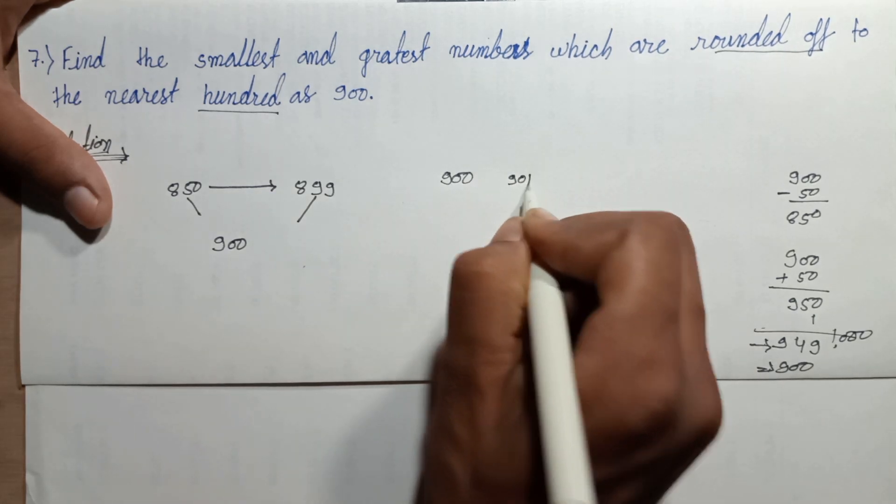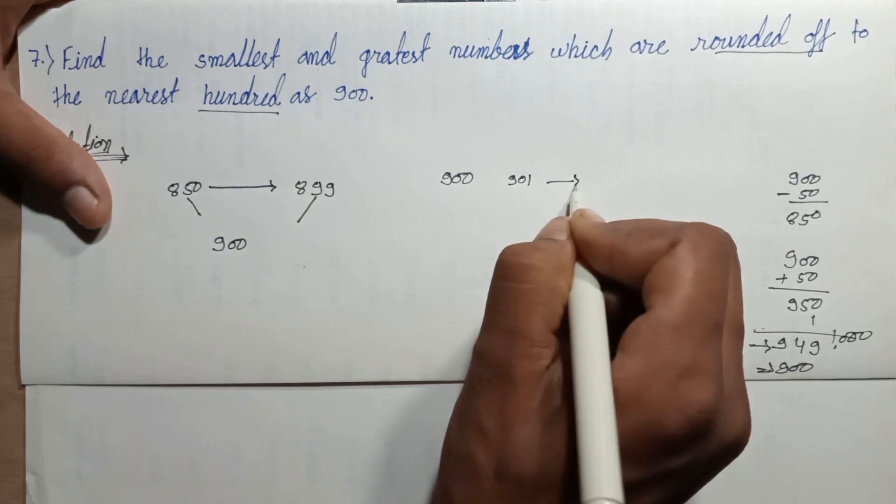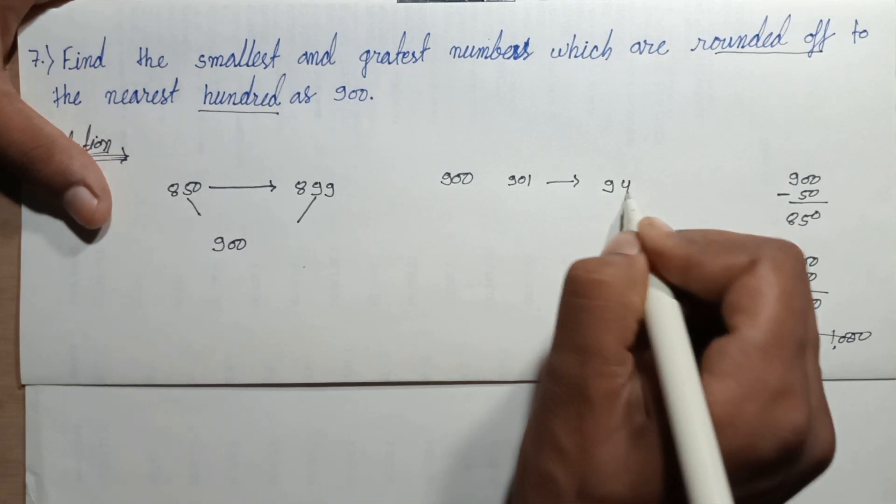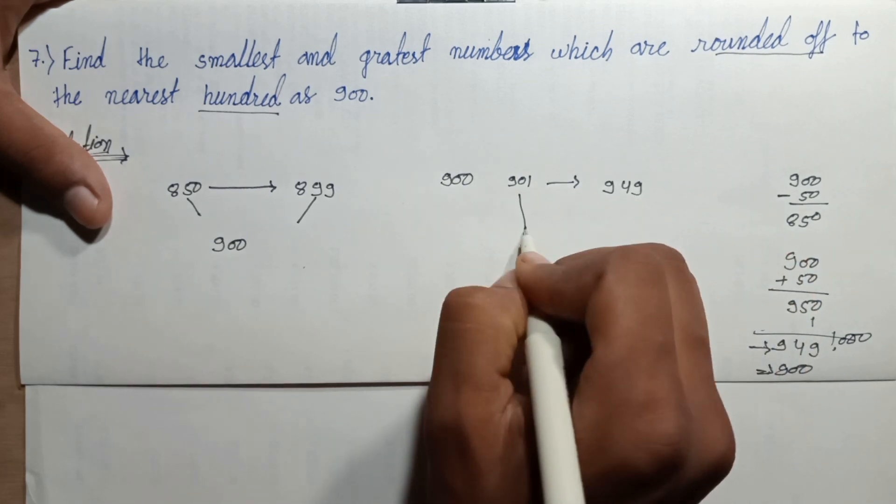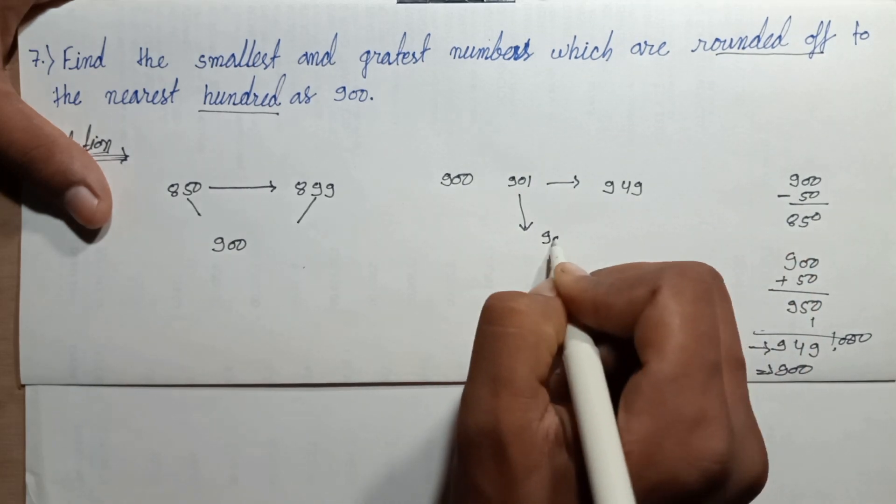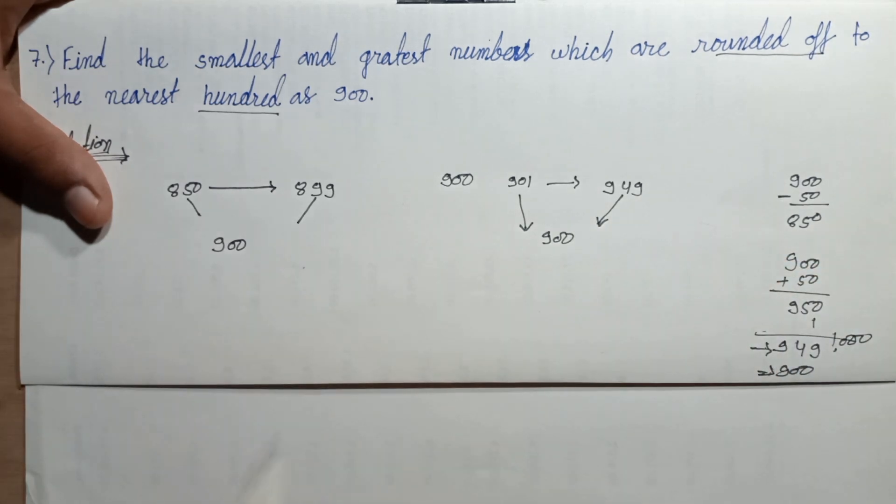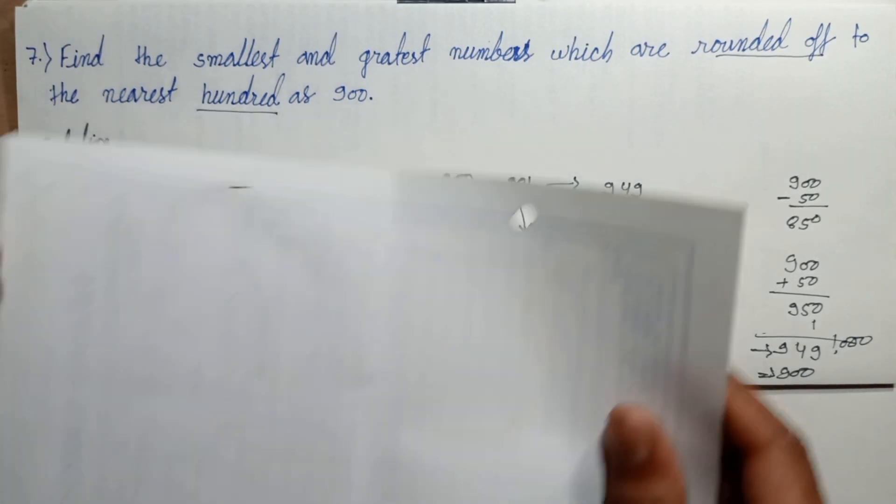Nine hundred one, two, nine hundred forty-nine. Rounded of this number is nine hundred.